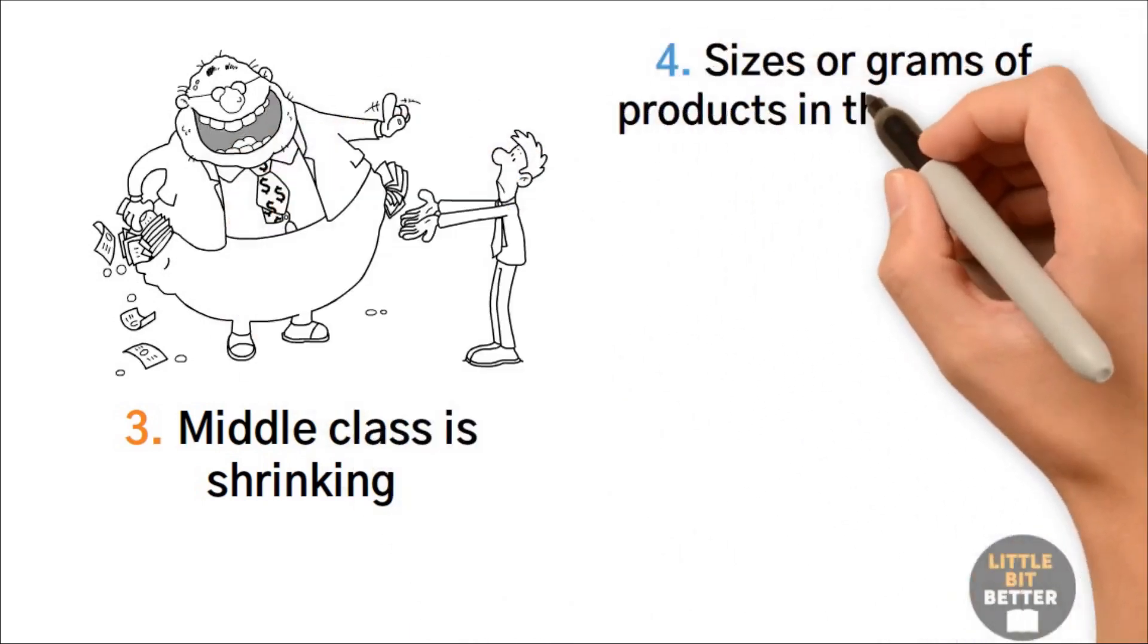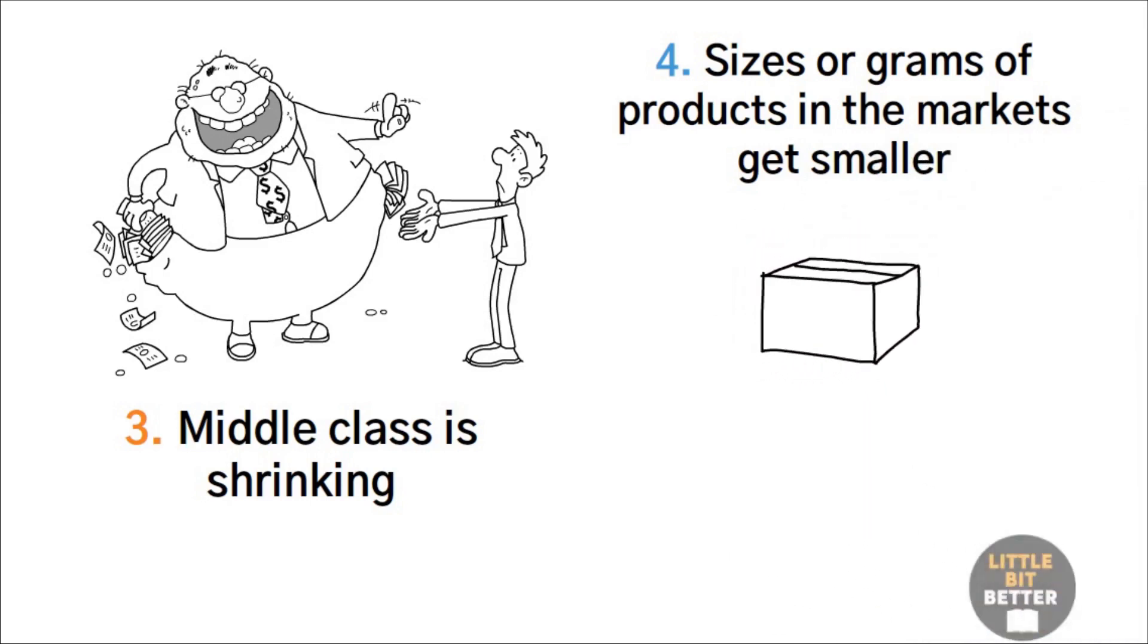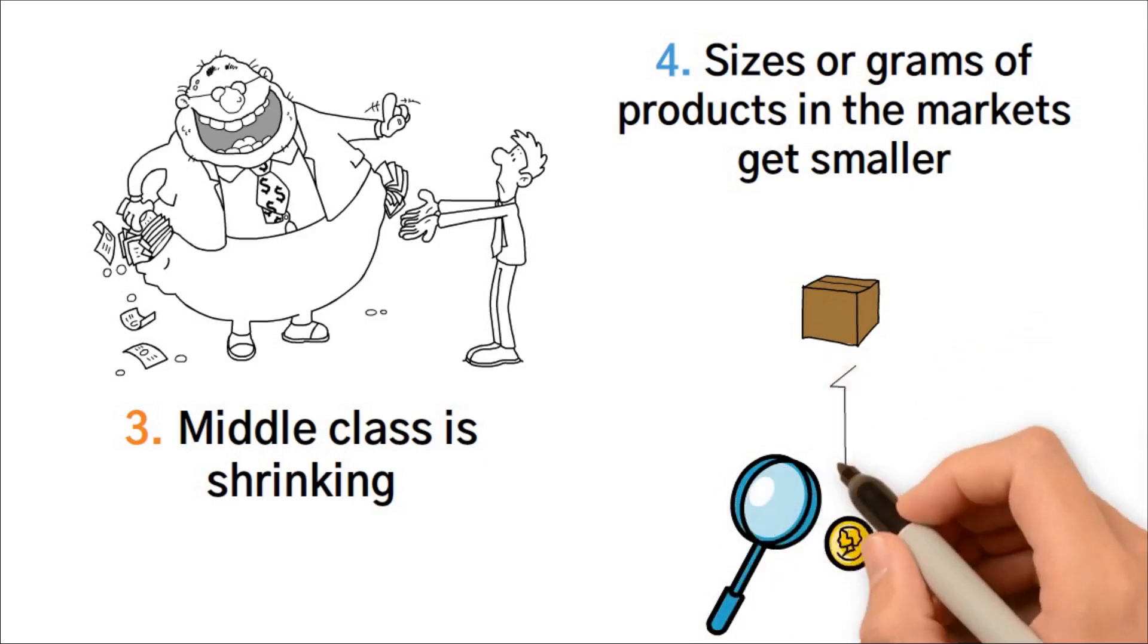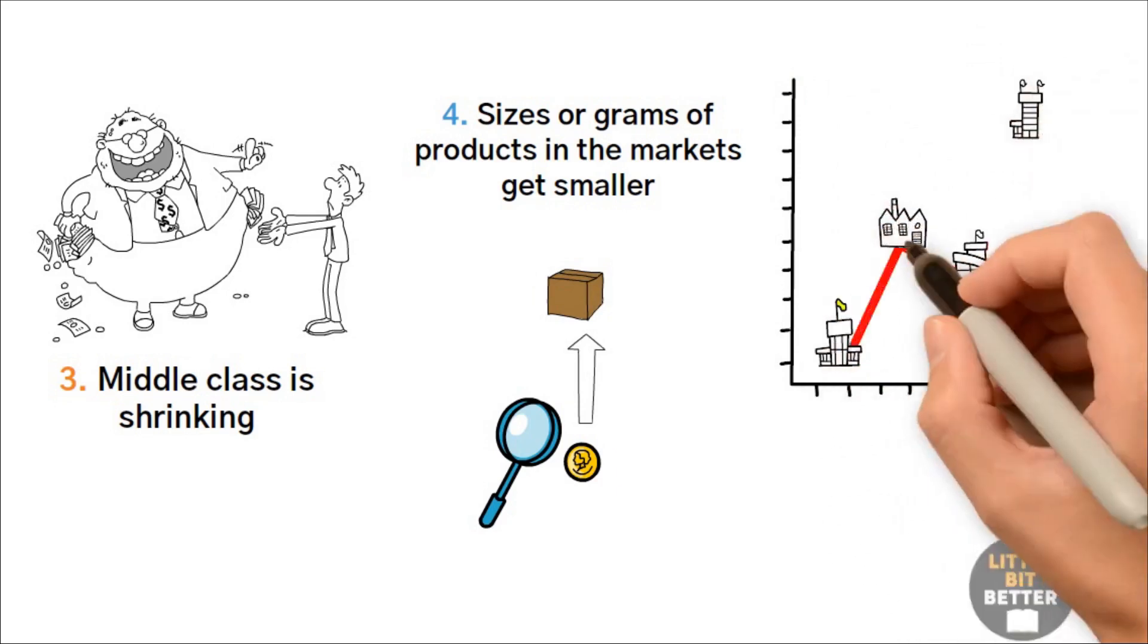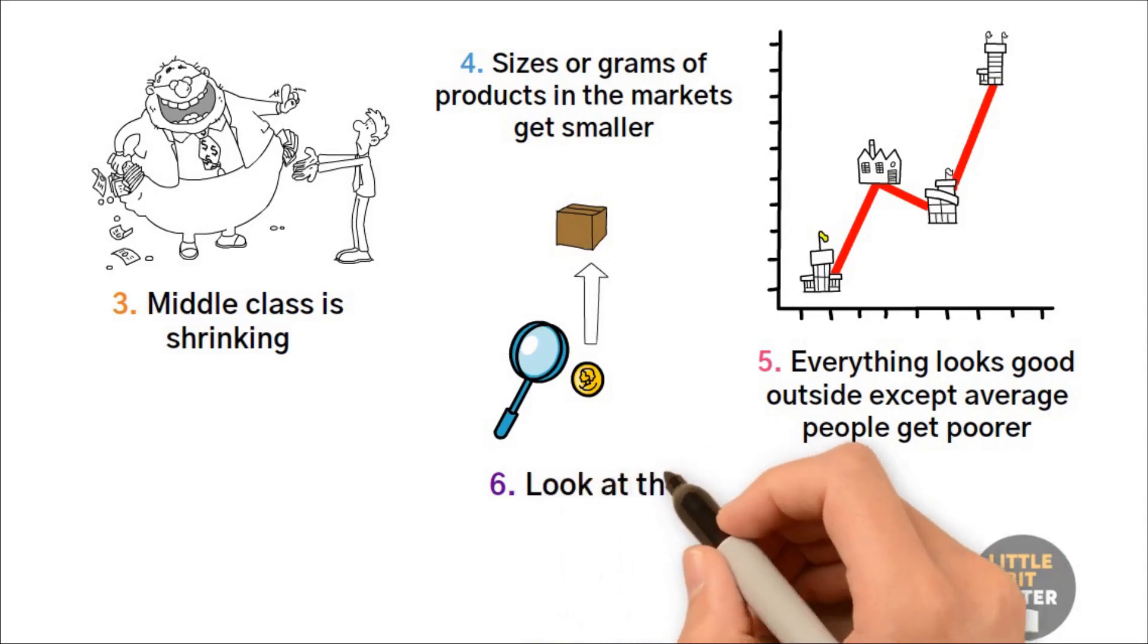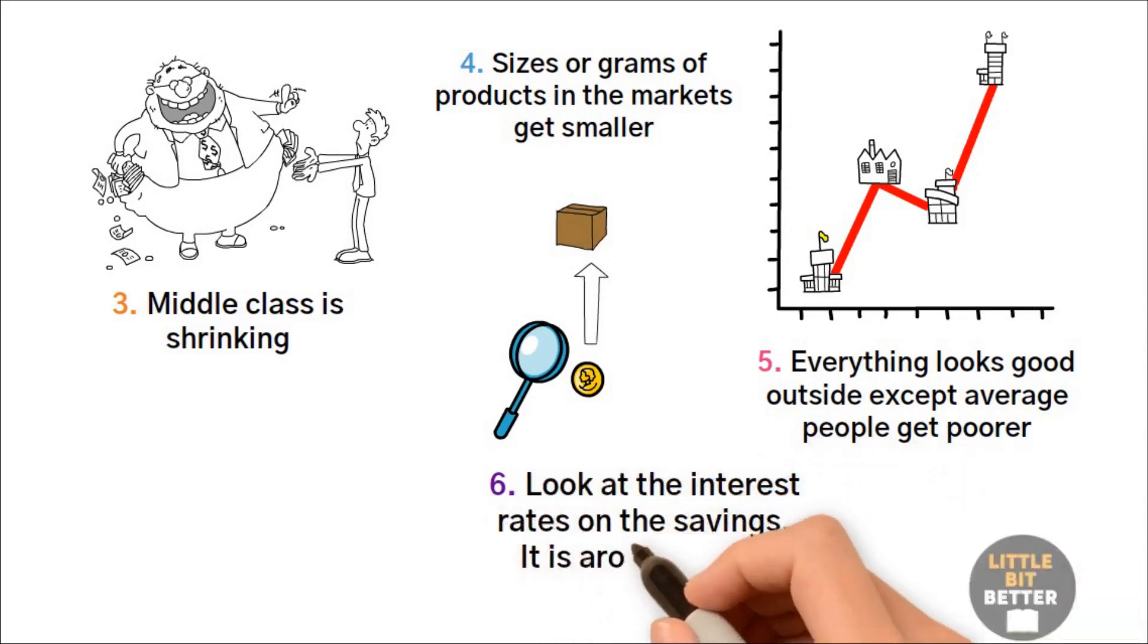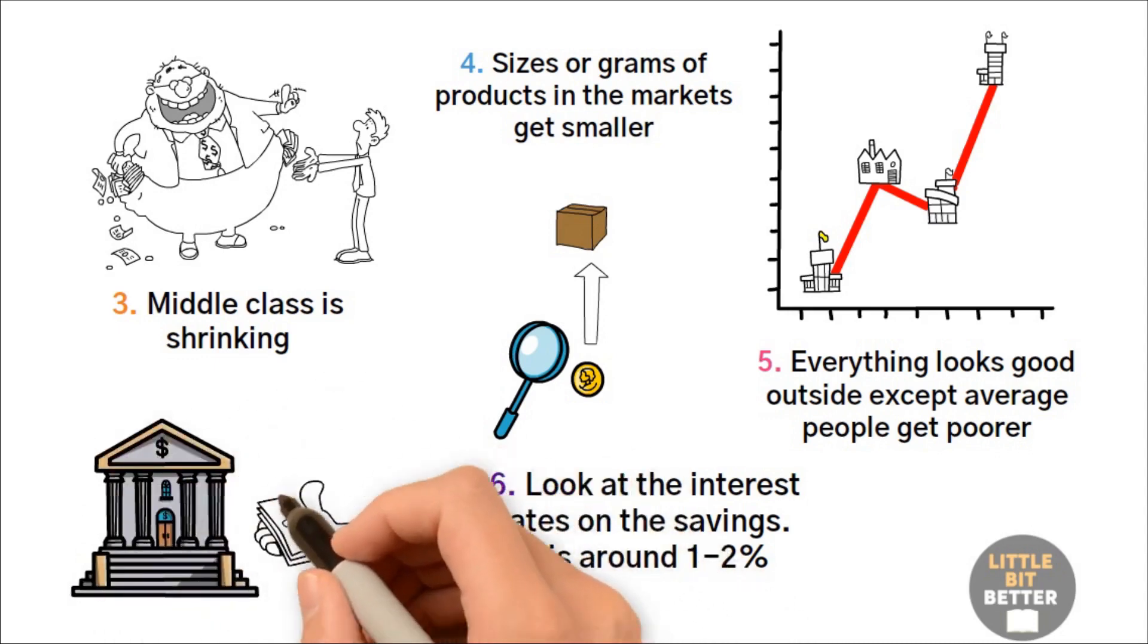It looks like it is the same price and the same product, but the weight or number of packs inside get reduced. This is very similar to the coin clipping we discussed above, but this time it is happening on products. 5. When the economy is in a bubble, stock prices and real estate prices go up. 6. Everything looks good outside, except average people get poorer. Look at the interest rates on savings. It is around 1-2%. There is so much printed money in circulation, and banks don't want your money.